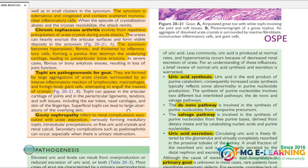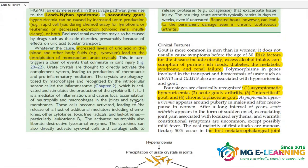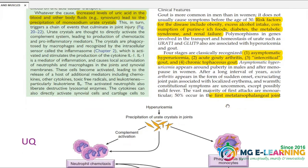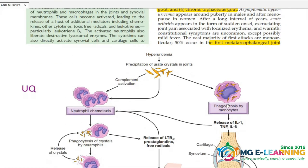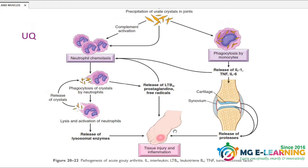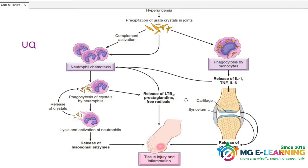Gout nephropathy — important highlighted points are very good. For clinical features, you can see the four stages in this diagram. The pathogenesis diagram is a flowchart with causative agents — so you can see this diagram and remember the concept.